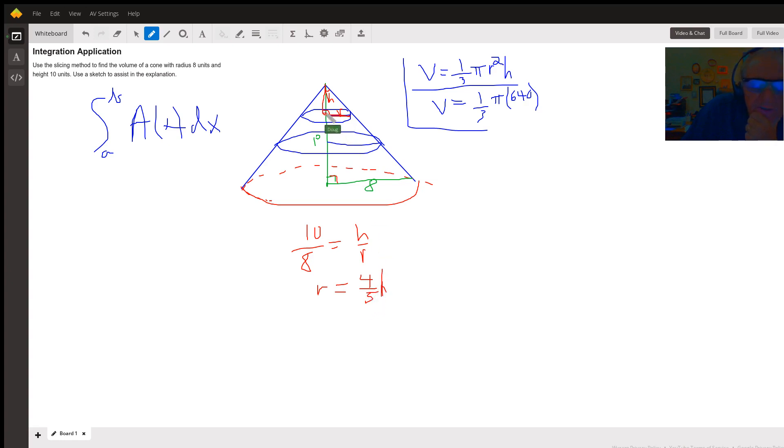So the area of this typical circle right here depends on how far it is from the vertex of the cone. It's 4 fifths of whatever that distance is. And that's what the radius is. So the area of that little circle, A of h, is going to be pi times the radius squared. But the radius is 4 fifths h.